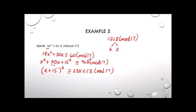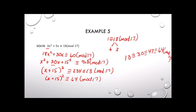Now we need the right-hand side as a perfect square. We have (x plus 15) squared congruent to 13 mod 17. Adding multiples of 17: 13 is congruent to 30, congruent to 47, congruent to 64 mod 17. And 64 is a perfect square.